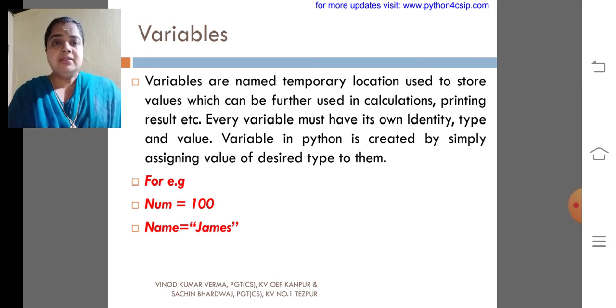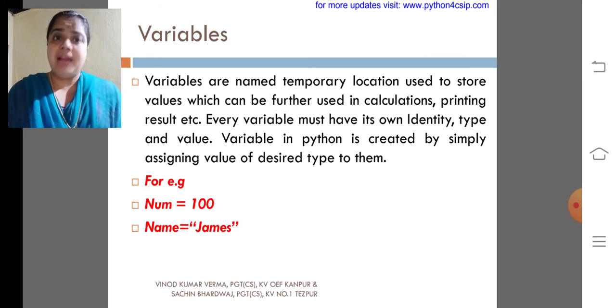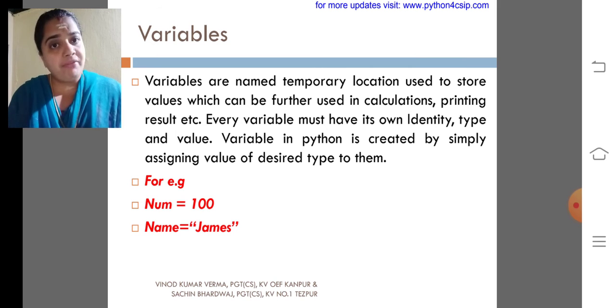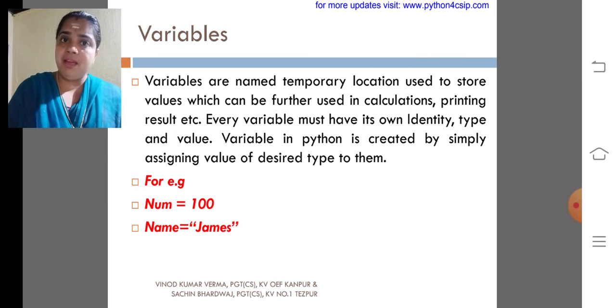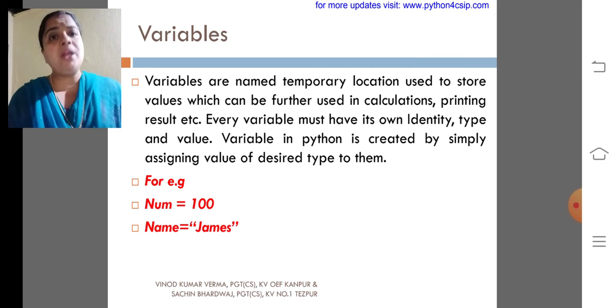That means each and every value has a type. If you are storing 10 in a variable, what type of variable is it? Integer. If you are storing 10.5, what kind of variable it may be? Floating. If you are storing your name in a variable, that kind of variable is termed to be string variable.